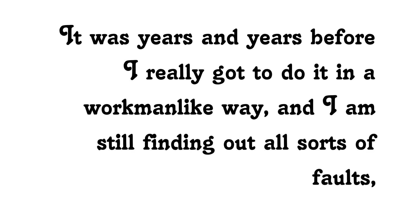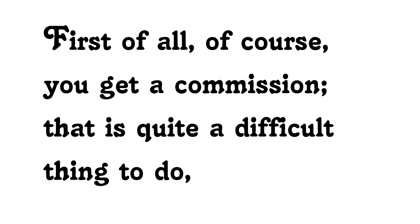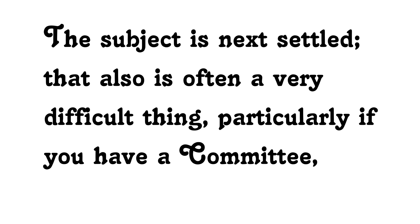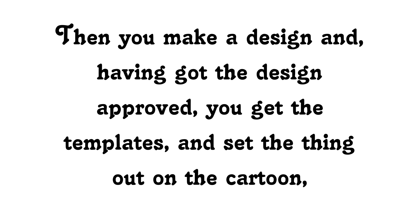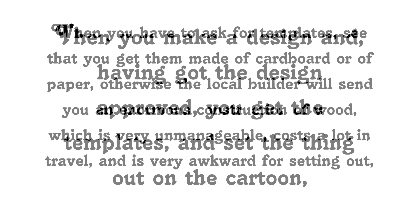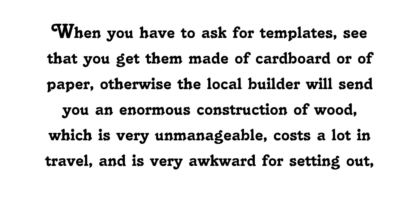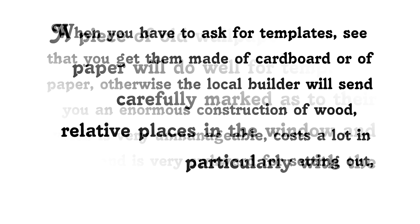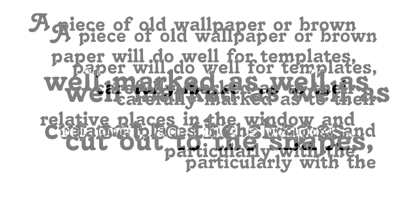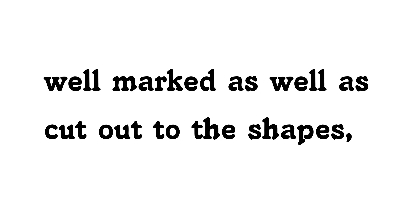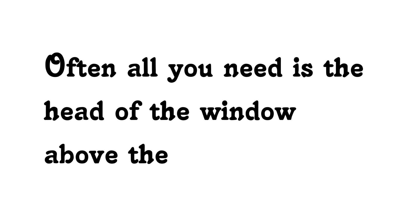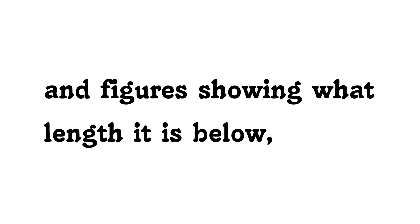First of all, of course, you get a commission — that is quite a difficult thing to do. The subject is next settled, which also is often very difficult, particularly if you have a committee. Then you make a design and, having got the design approved, you get the templates and set the thing out on the cartoon. When you have to ask for templates, see that you get them made of cardboard or paper; otherwise the local builder will send you an enormous construction of wood, which is very unmanageable. A piece of old wallpaper or brown paper will do well for templates — carefully marked as to their relative places in the window. You cannot trust the measurements if the work is not modern, and not always then; old work is almost always irregular.